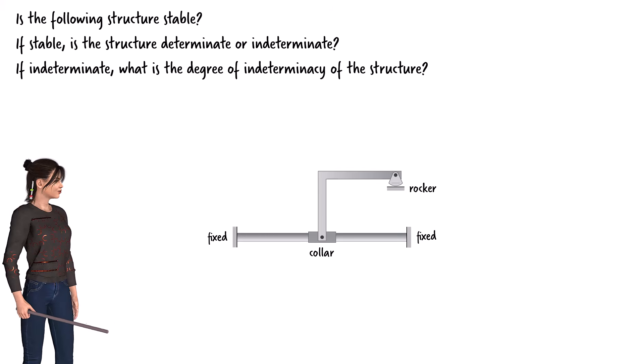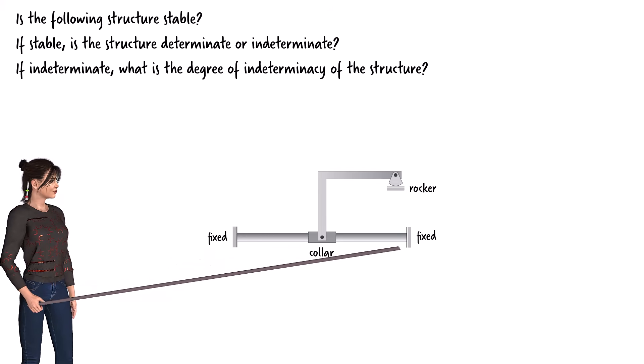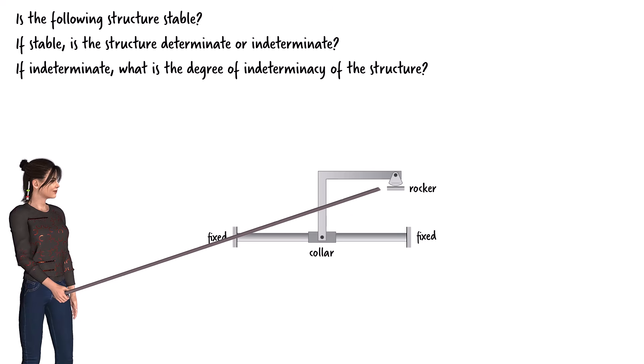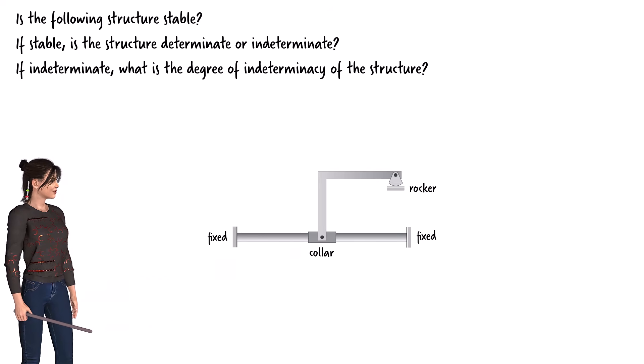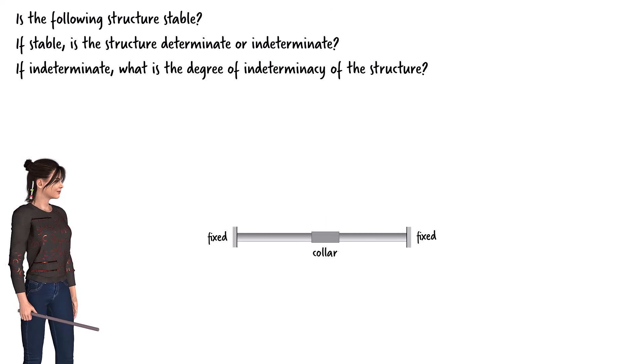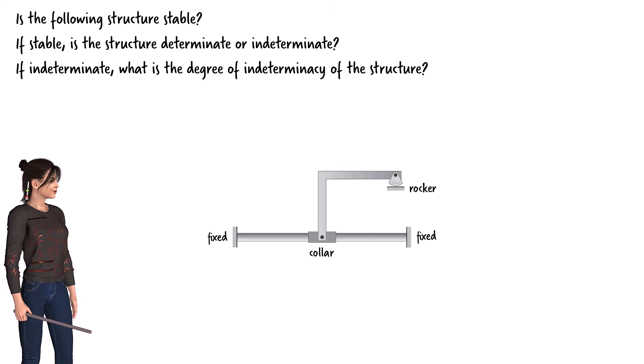The structure has two fixed supports, one here and one here. Additionally, there is a rocker support here and a smooth pin-connected collar here. As a reminder, the collar is free to slide along the length of the beam. So, we can treat it as a roller support.